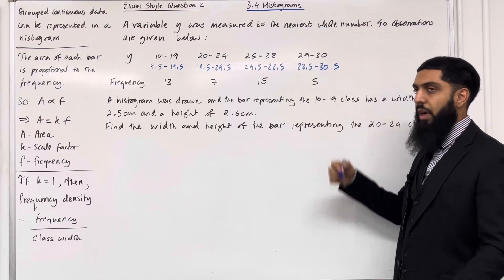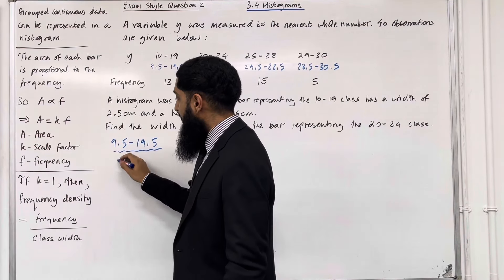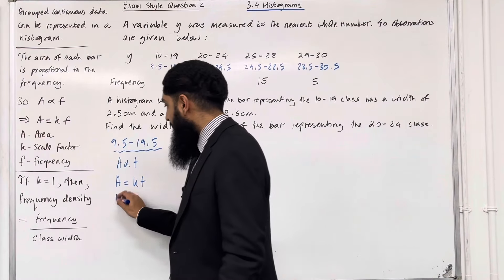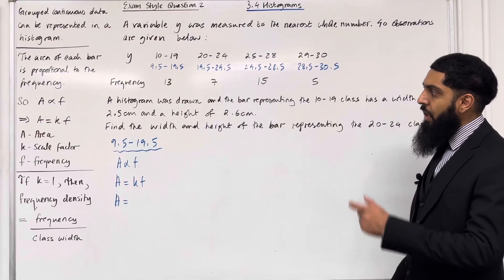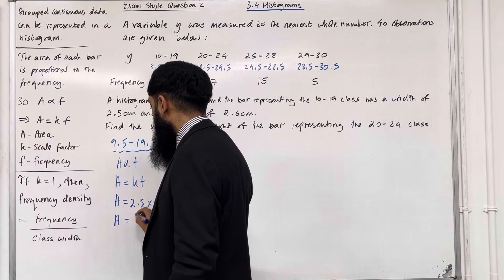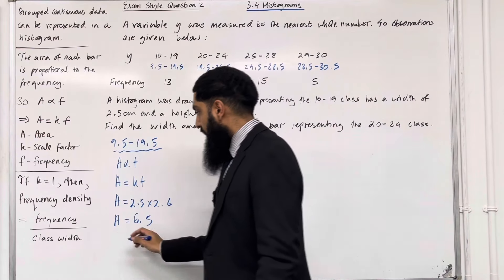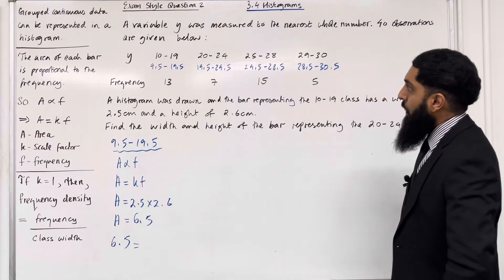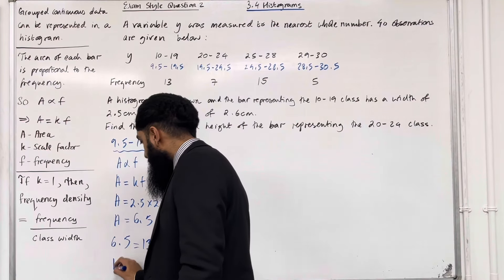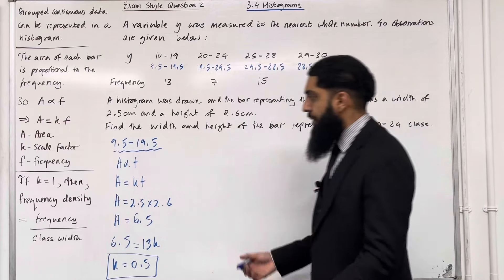Using class boundaries, we work with the interval 9.5 to 19.5. Area is proportional to frequency, so A equals KF. The area of this bar is 2.5 times 2.6, which equals 6.5 cm². The frequency of this class interval is 13, so 6.5 equals 13K. Therefore K equals 6.5 divided by 13, which is 0.5. So the scale factor K equals 0.5.